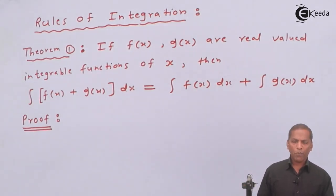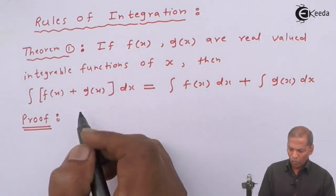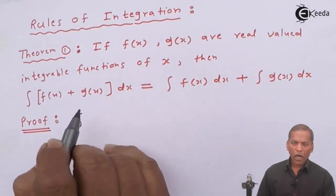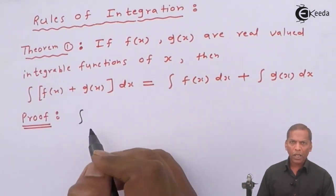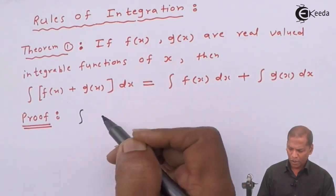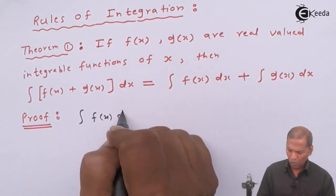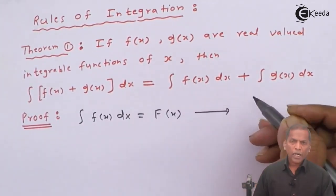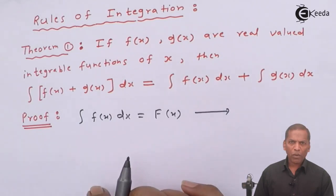Now, let's see the proof. The proof is quite simple. First of all, integral f(x) dx is equal to capital F(x). Let us denote this equation number 1.